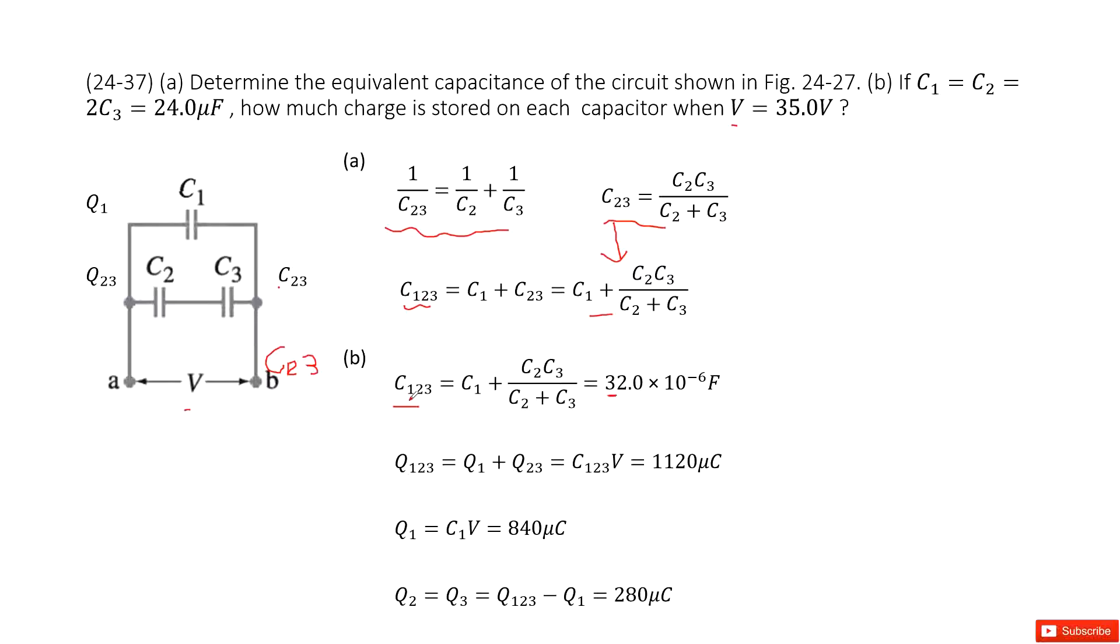Now you can see the charges from point A to point B, we can consider it as Q123. It is equal with Q1 plus Q23, because there is a parallel connection. So Q1 plus Q23 equals Q123. And then this charge Q123, we can write as capacitance C123 times V. And then you get the answer there.